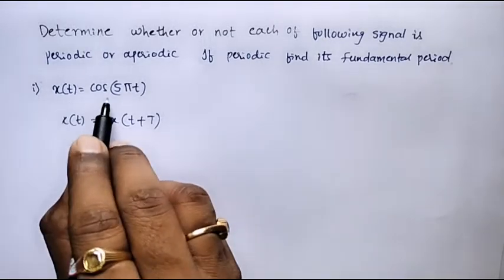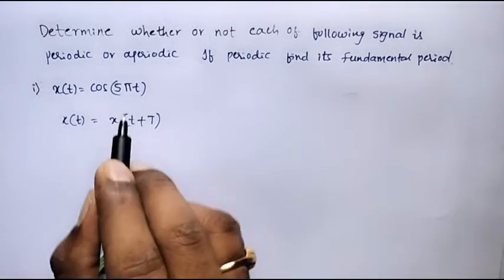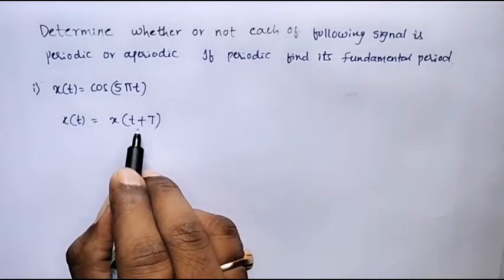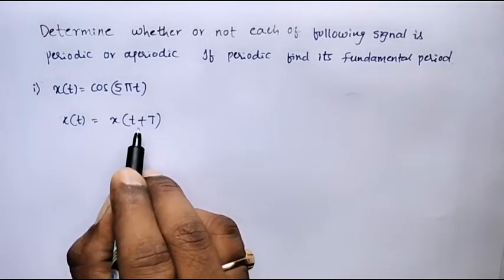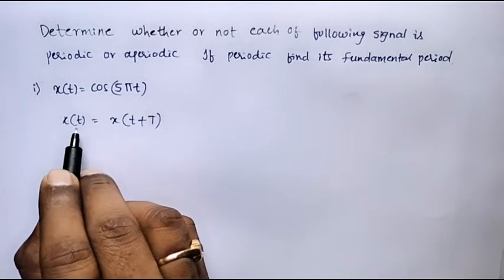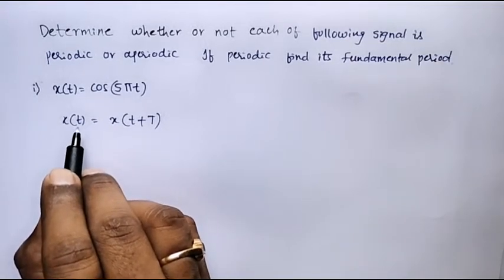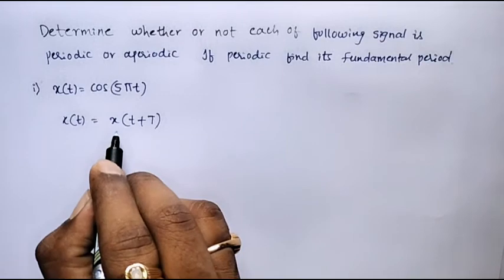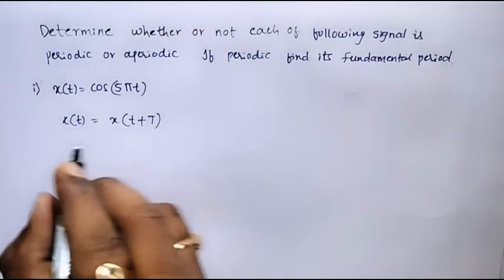Here x(t) = cos(πt). Now, we will try to calculate x(t + T); it should be equal to x(t). If that is the case, then this signal is periodic. Now I will find x(t + T).